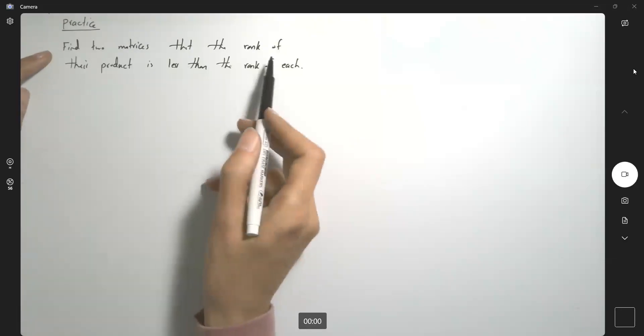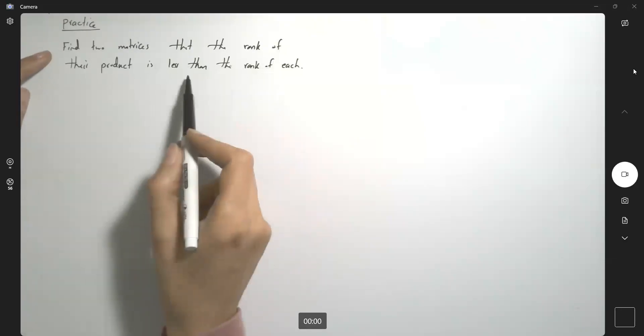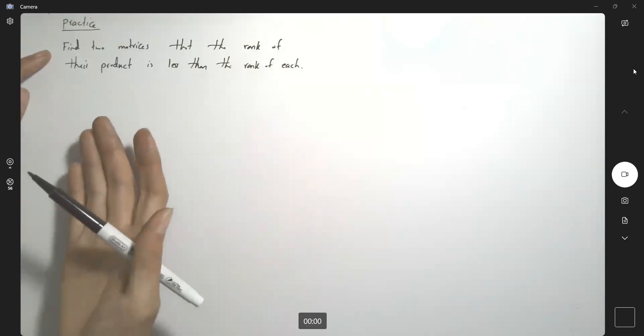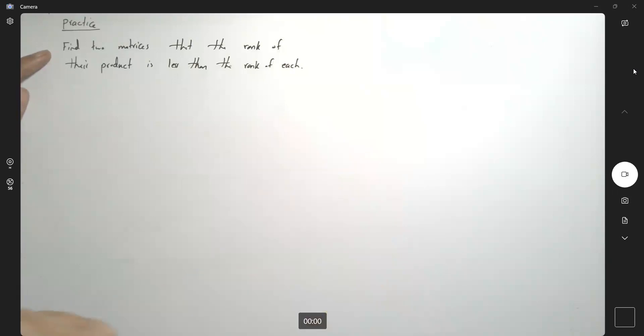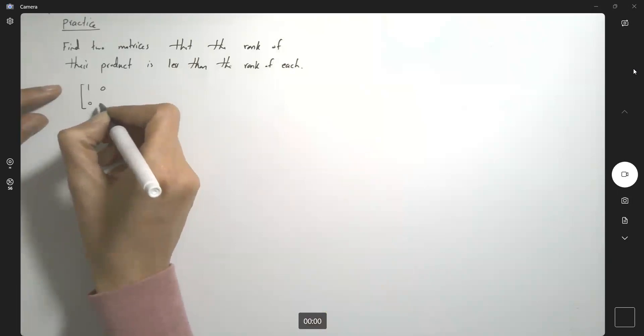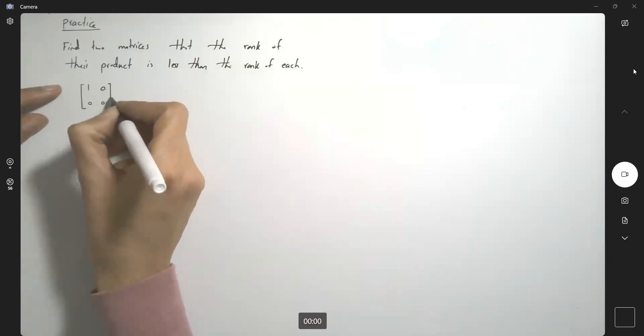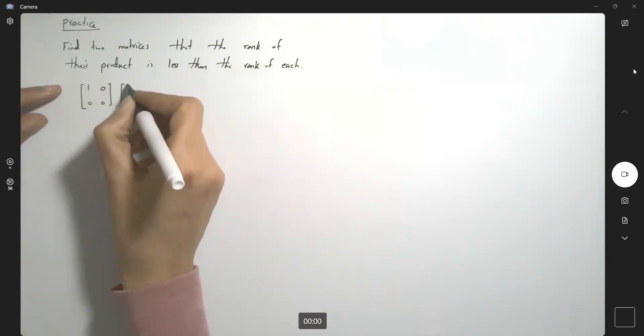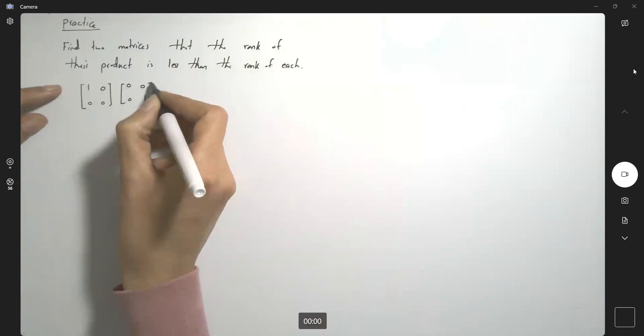Find two matrices where the rank of the product is less than the rank of each one of them. We have many examples. For example, think about the first matrix as [[1, 0], [0, 0]] and the second matrix as [[0, 0], [0, 1]].